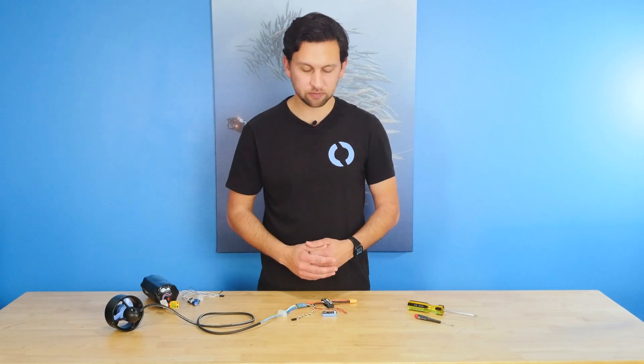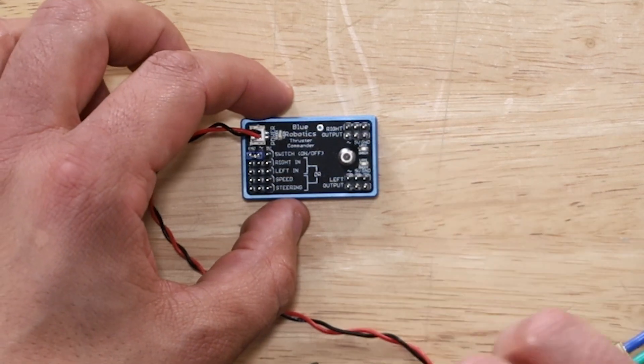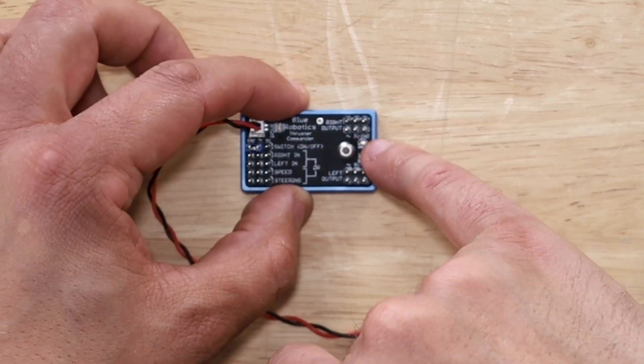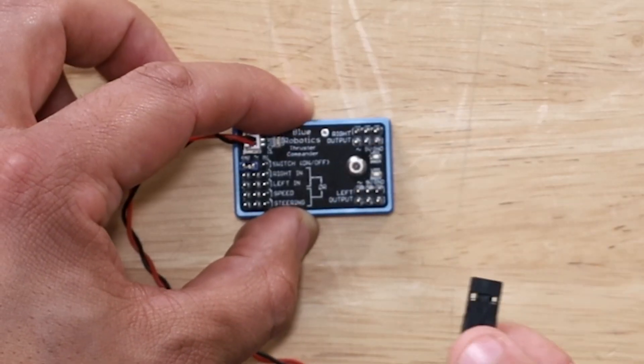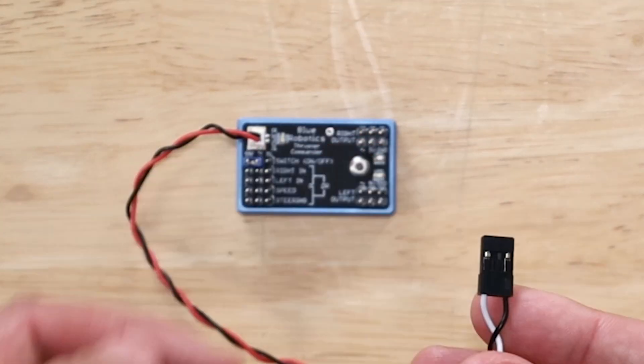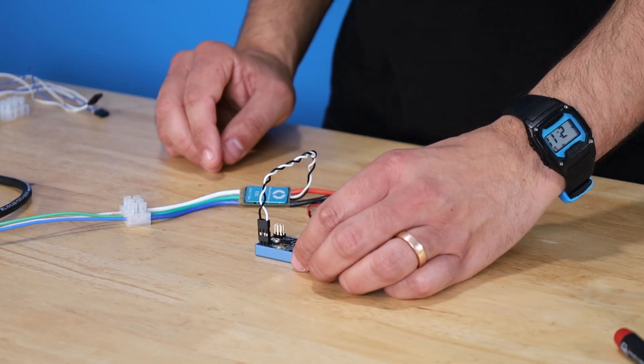Next, we need to connect that signal from the speed controller to one of the outputs of the thruster commander. Since we just have one thruster connected today, I'm just going to connect it to the top output, which is labeled right output. You can see right under that it's labeled ground. From the right to left, it's labeled ground, 5 volt, and signal. We want to make sure the black wire is connected to ground and the white wire is connected to signal, like so, with the white wire on the left.